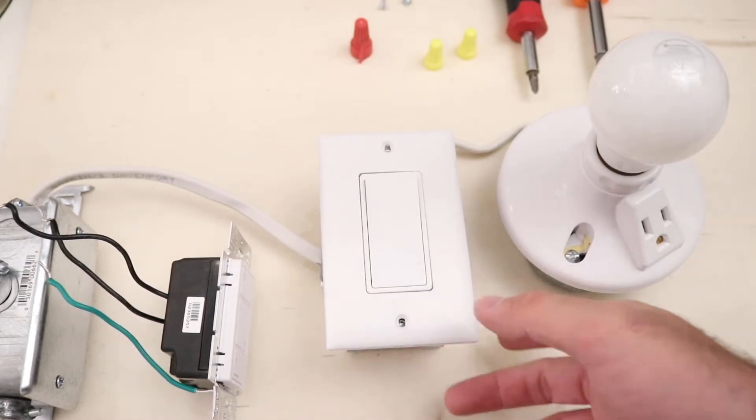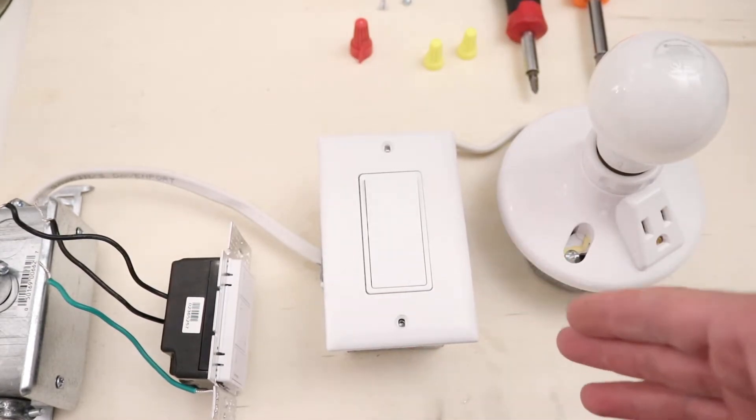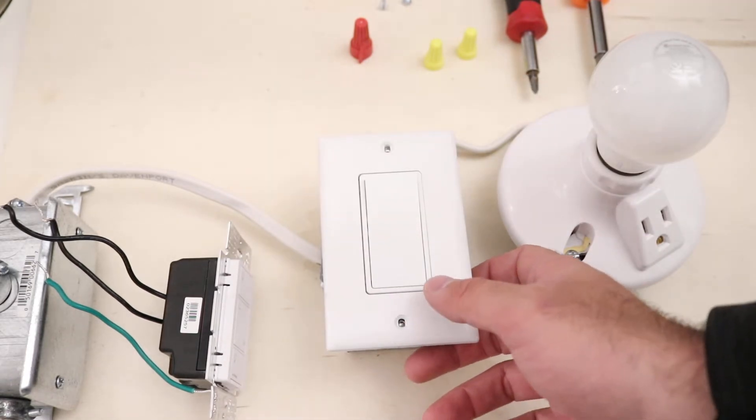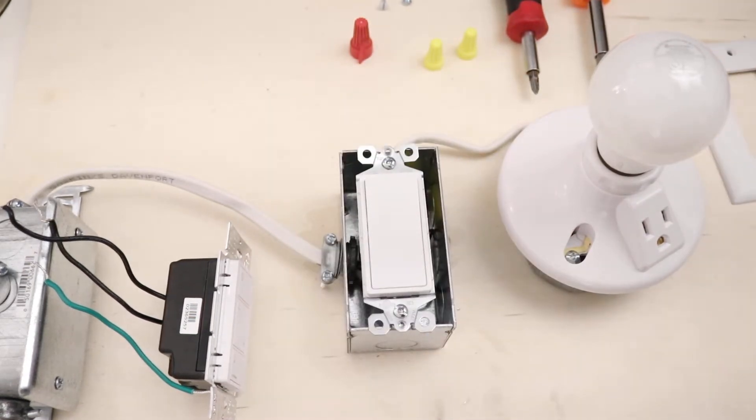Here's our existing switch. You take the cover plate off before you do anything. Make sure the power is off and then you can get started on this work. So we've got the power off, made sure of that.